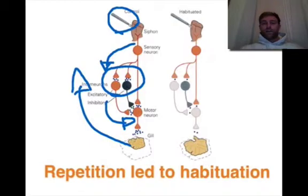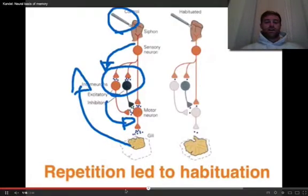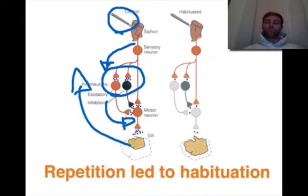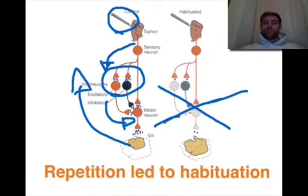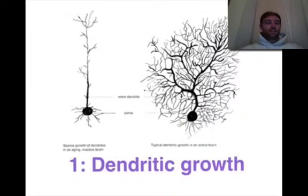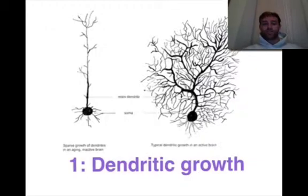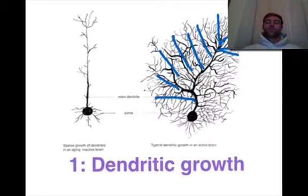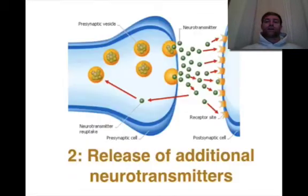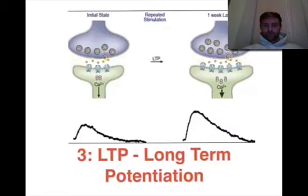Through habituation, over time the sea slug learnt that if it was stimulated, there was no real danger to the siphon, so the message actually decreased. You can see how the dendrites grew — the neuron changed. On the left, you have a small amount of dendrites, and on the right you can see hundreds more dendrites, because the neural pathway needs to be quicker so the slug knows it doesn't have to retract its gill. There was also an increase in neurotransmitters to aid with the pace at which the message was sent through.